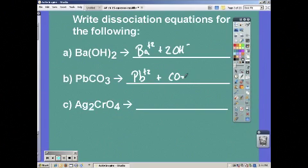Lead was a plus two and carbonate a negative two, and silver was a plus one so we need two, and chromate a negative two.